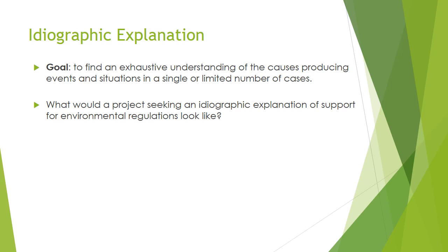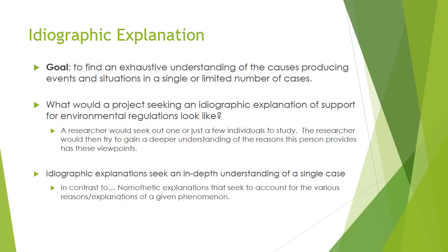Now let's look at the different ways we might explain. We've got two: the ideographic explanation and the monothetic explanation. With the ideographic explanation, we use this method to find an exhaustive understanding of the causes producing events and situations in a single case or a limited number of cases. With the monothetic explanation, what we're trying to do is have a general understanding of why something happens.